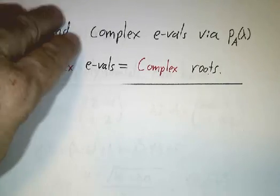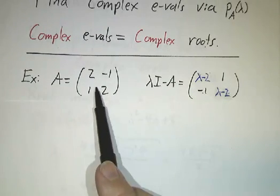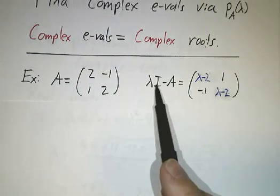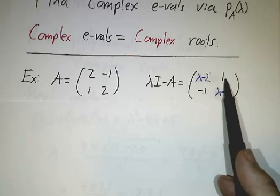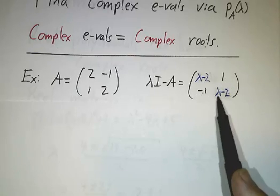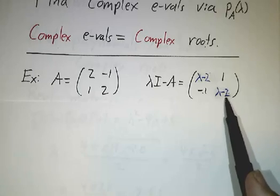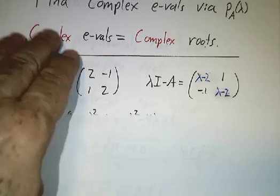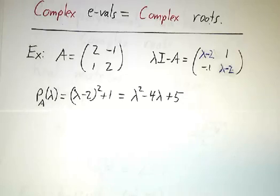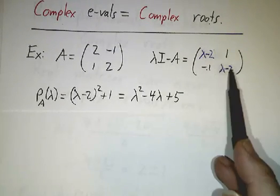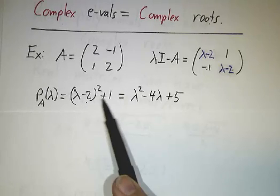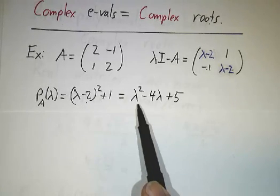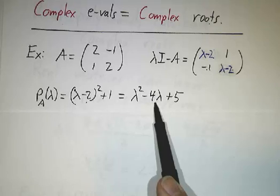So let's see how that works for the matrix we've been looking at. You take λI minus that matrix, and get (λ-2, 1; 1, λ-2). Then you take the determinant of that matrix, and you get (λ-2)(λ-2) minus (1)(-1). In other words, (λ-2)² + 1. And if you expand that out, that's λ² - 4λ + 5.